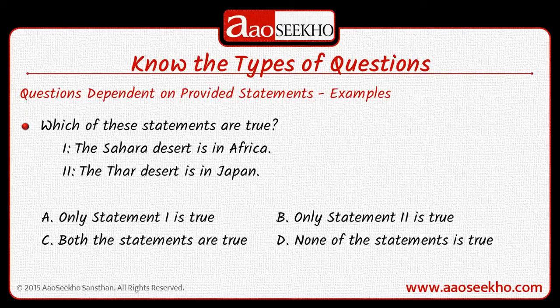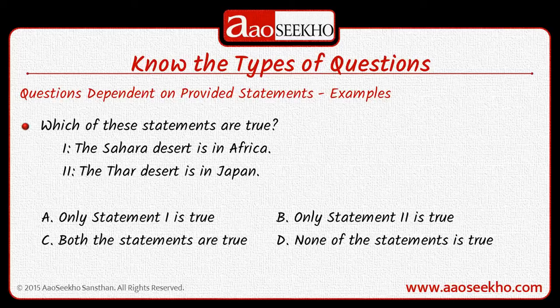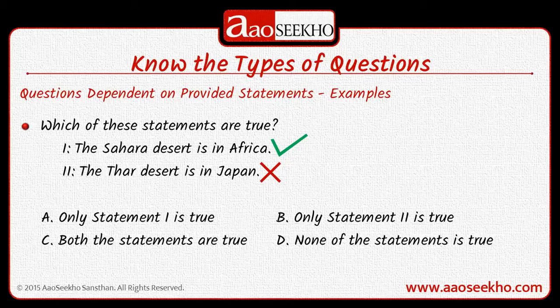Let's take a few examples. The first example is: Which of these statements are true? Statement 1 says the Sahara Desert is in Africa, and Statement 2 says the Thar Desert is in Japan. The options are: Only statement 1 is true; Only statement 2 is true; Both statements are true; None of these statements is true. We clearly know that Statement 1 is true — the Sahara Desert is certainly in Africa — but Statement 2 is untrue because the Thar Desert is in Rajasthan, India.